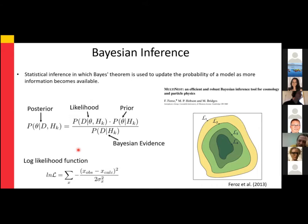Often the way we assess the likelihood is with a log-likelihood function. We look at the difference between our observed data and model data divided by the uncertainty or standard deviation of each measurement. These are all normalized by the Bayesian evidence. What we're really interested in is the posterior distribution at the maximum likelihood — where our models best fit our data.